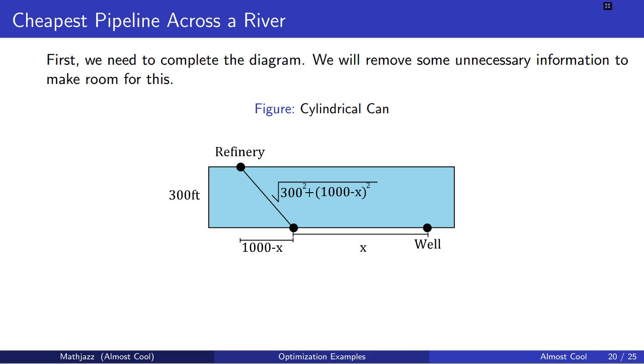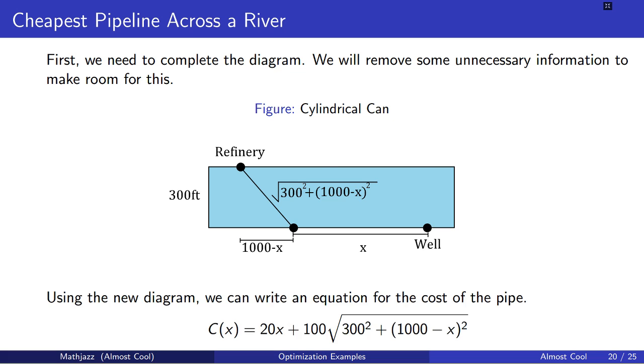So now that we know the two distances that we need—the distance along the bank of the river and the distance across the river—we will come up with a cost function. The cost of the pipe is going to be 20 times x, because it's 20 dollars a foot and x feet, and it's going to be 100 dollars a foot times the square root of 300 squared plus the square of 1,000 minus x feet. That'll be the total cost of the pipe from the well to the refinery.